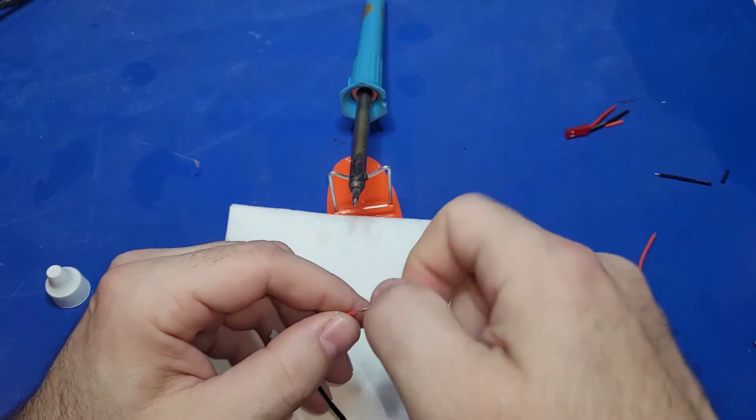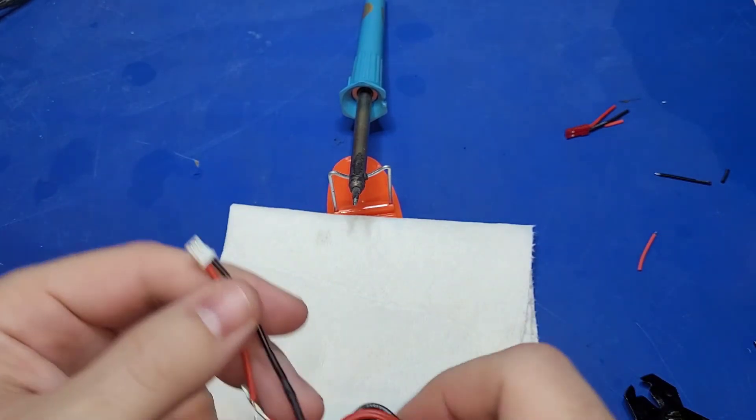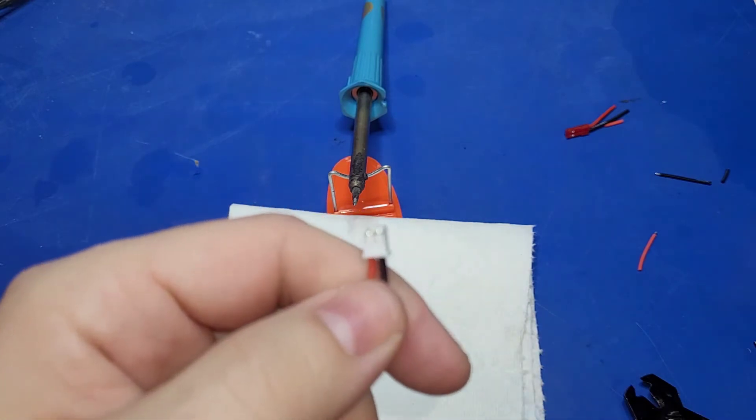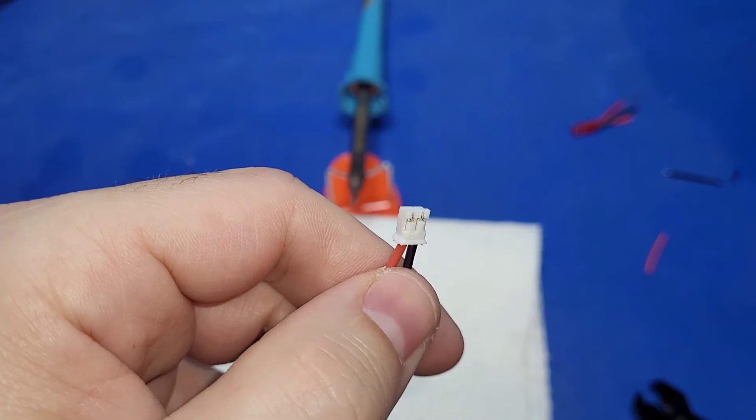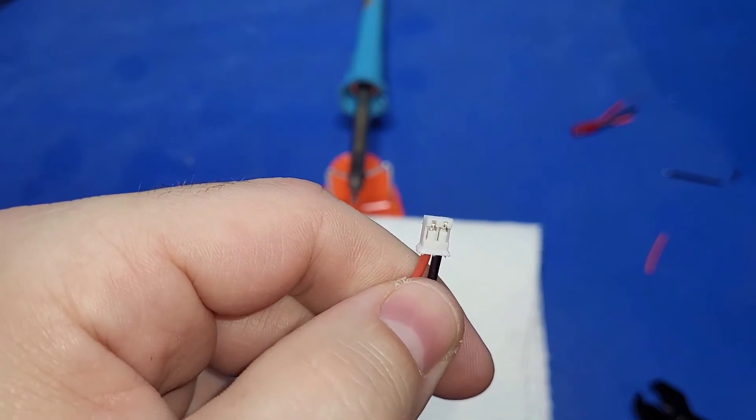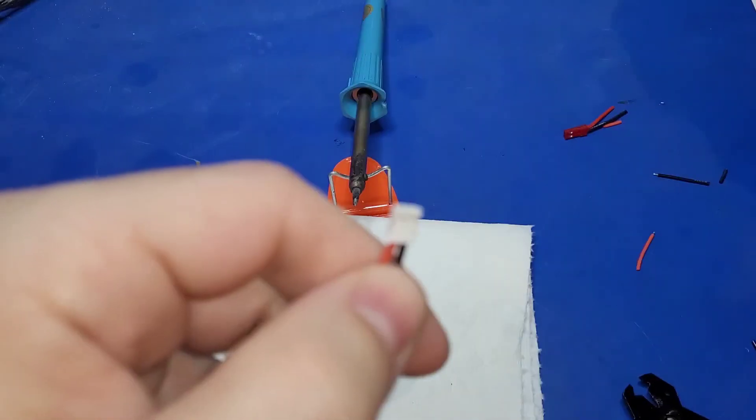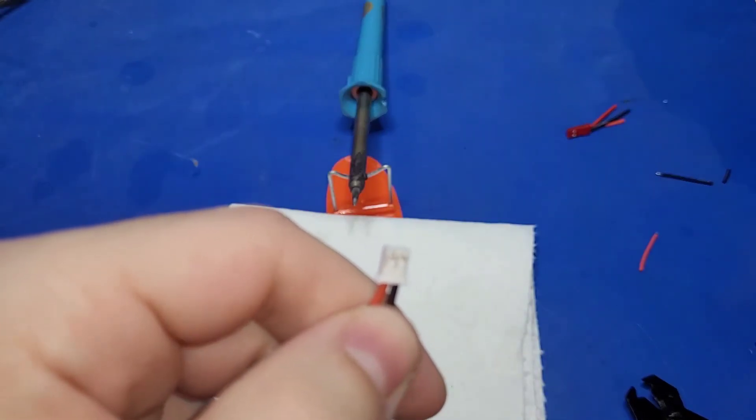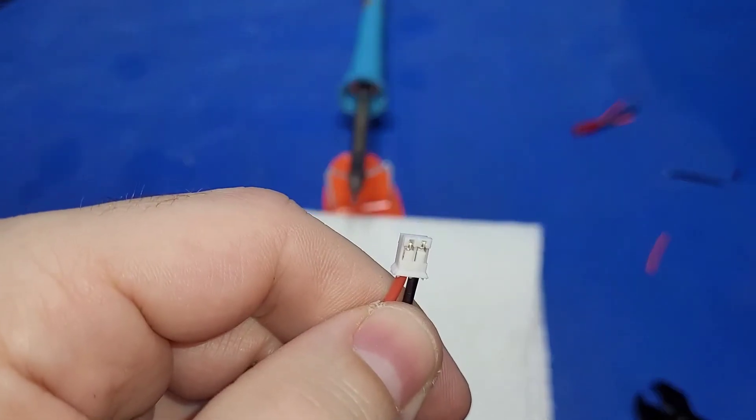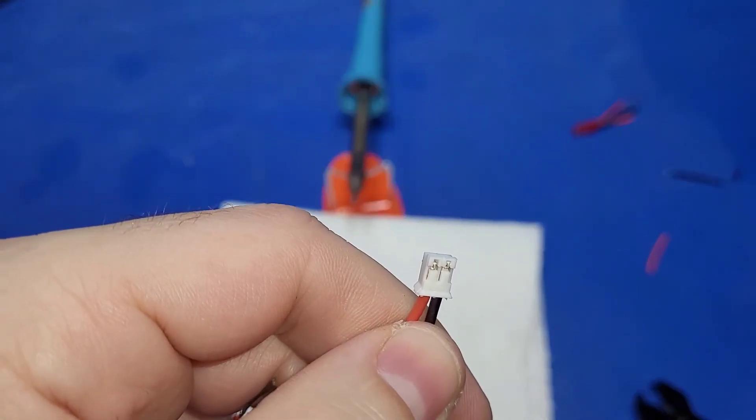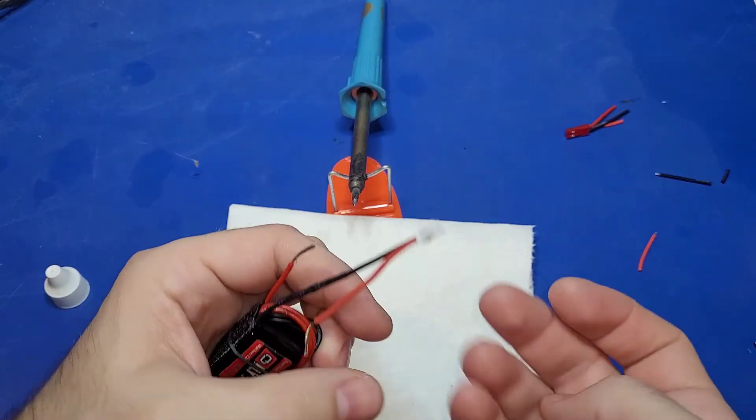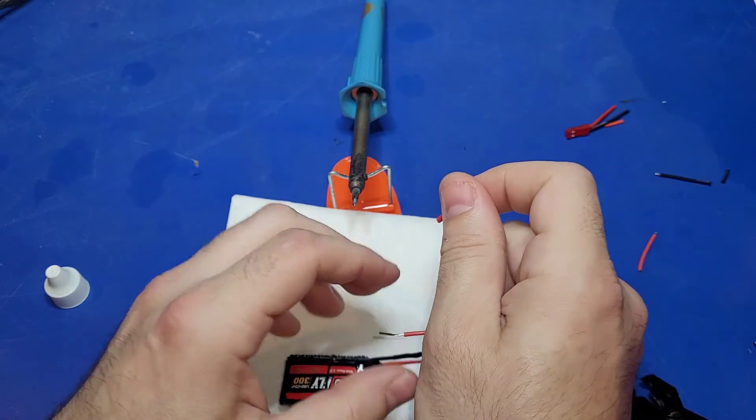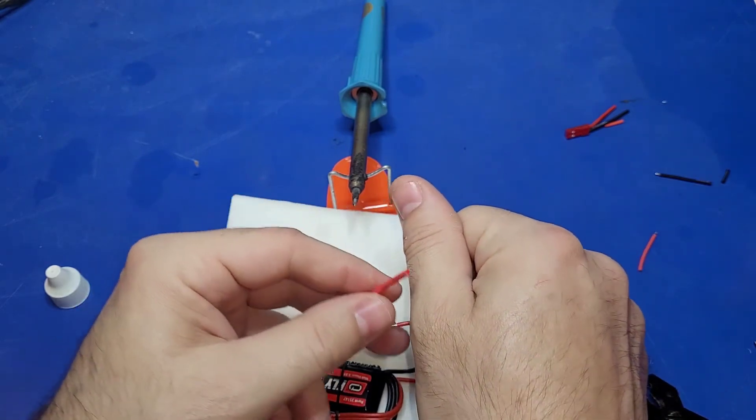Twist it up. Don't forget your heat shrink. Not a big deal if you do forget. Because you can always disconnect the wires there. At that little tab, you can pull the wire out. You can pull the wire out of that little tab and slip it over. But it's usually just easier to remember to do it in the first place.